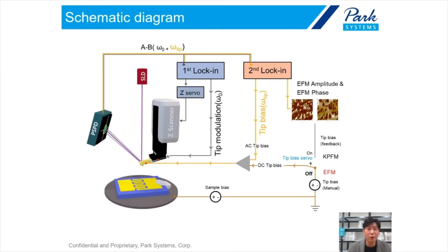This figure shows a schematic diagram of EFM and KPFM. In both modes, the first lock-in amplifier is used for non-contact imaging — meaning this first one is just for the height image, like conventional AFM. The second lock-in amplifier is used for electrical signal. The main difference between EFM and KPFM is applying the DC bias for the bias servo.